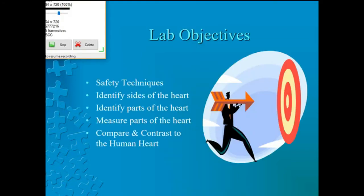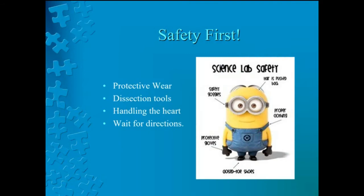By the end of this lesson, students will be able to demonstrate proper dissection safety techniques, identify the right and left sides of the heart, identify the parts of the heart — auricles, superior vena cava, pulmonary vein, aorta, left ventricle, pulmonary artery, bicuspid and tricuspid valve — measure the diameter of the aorta, left and right atria, left and right ventricles, and compare and contrast the structure of a sheep heart to a human heart.